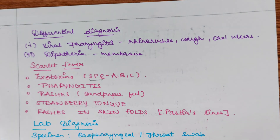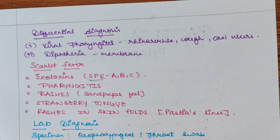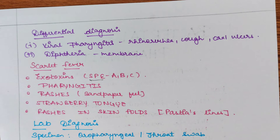Another complication includes post-streptococcal glomerular nephropathy, which causes renal glomerulonephritis, in which there will be excretion of proteins from the kidney and the protein in the urine will increase. The differential diagnosis includes viral pharyngitis and diphtheria. In viral pharyngitis, there will be rhinorrhea (that is, runny nose), cough, and oral ulcers.